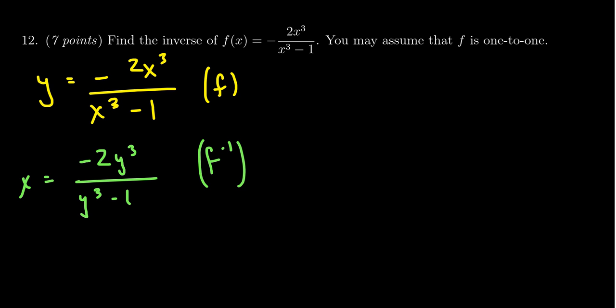It's now our goal to solve for the y variable. Since we have a y in the numerator and the denominator, we're going to have to clear the denominators to try to combine the y's together. So I'm going to times the left-hand side by y cubed minus 1 so that they cancel.